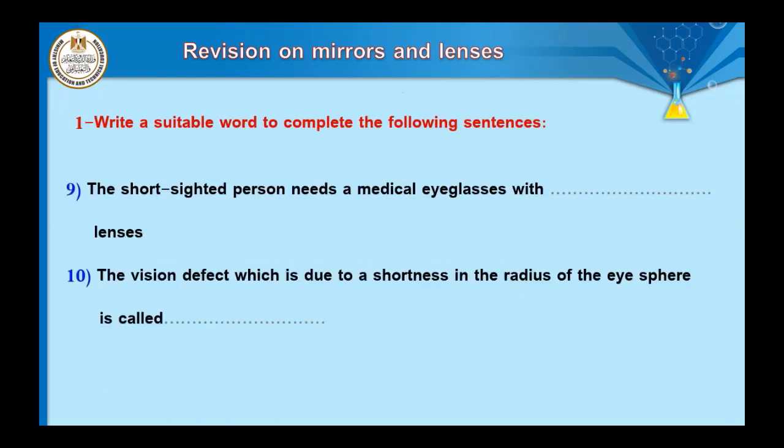Question number nine: the short-sighted person needs medical eyeglasses with a ___ lens. Short-sightedness can be treated by a concave lens to diverge light rays before entering the eye. Question number ten: the vision defect due to shortness in the radius of the eye sphere is long-sightedness. Long-sightedness can be treated by a convex lens to collect light rays before entering the eye.